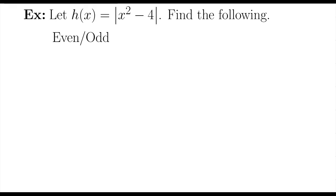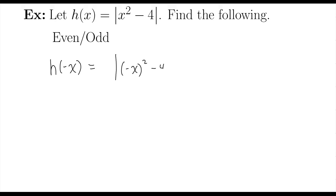Let's determine if the given function is even, odd, or neither. We check this by changing x to negative x. When you square a negative you end up with a positive, so negative x squared is the same thing as x squared without the negative.